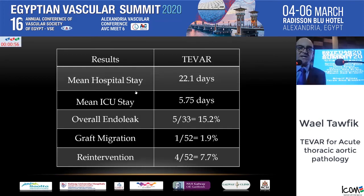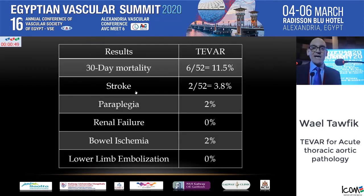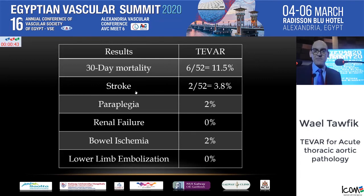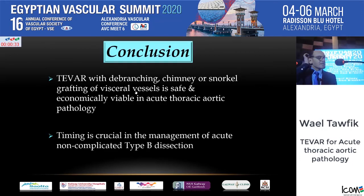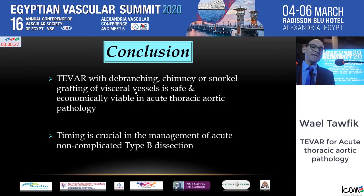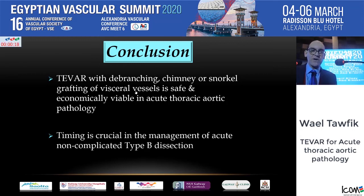Mean hospital stay was 22 days. Graft migration occurred in one case, with re-intervention in four. 30-day mortality was six cases; stroke in two, paraplegia in one, and bowel ischemia in one. Overall mortality at five years was 38%. In conclusion, TVAR — with CSF drainage and occasional debranching or chimney into visceral vessels — is a safe option for acute thoracic aortic pathology, but timing is crucial in both trauma and type B dissections.